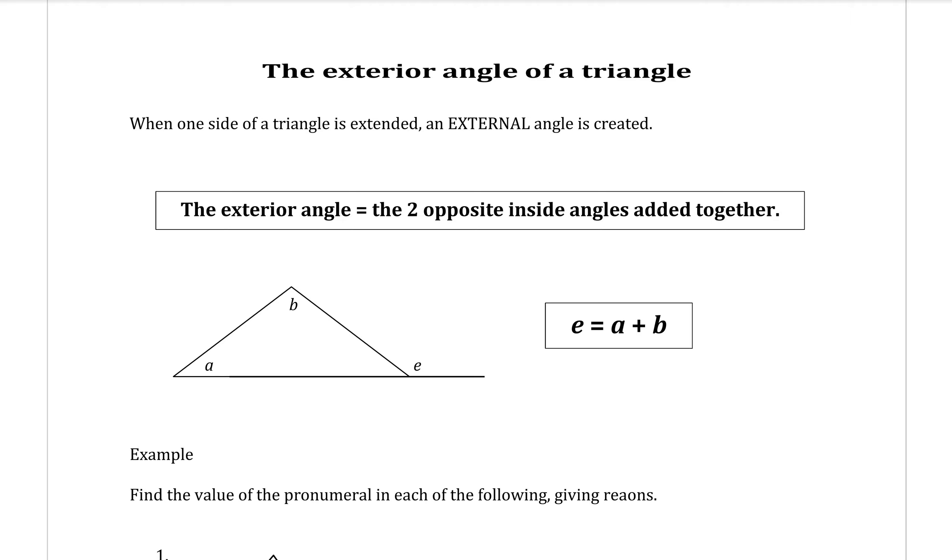Today we're starting work on the exterior angle of a triangle. When one side of a triangle is extended, for example if I take the bottom side of this triangle here and extend it out past that last corner of the triangle, the angle that is created here is called the exterior angle.